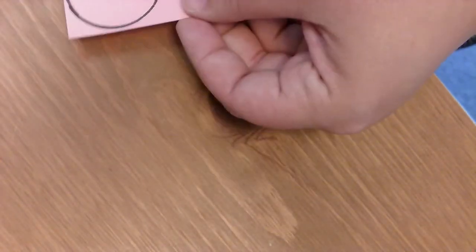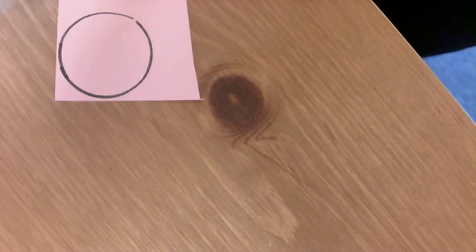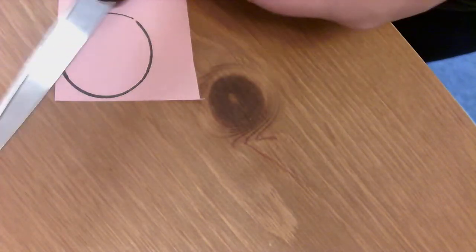Alright, so you've drawn all your circles and now you're ready for the next step? Okay, so we're going to cut out our circles now. We're going to get our scissors, and we're going to be very careful with our scissors, and we're going to cut out all of our circles.